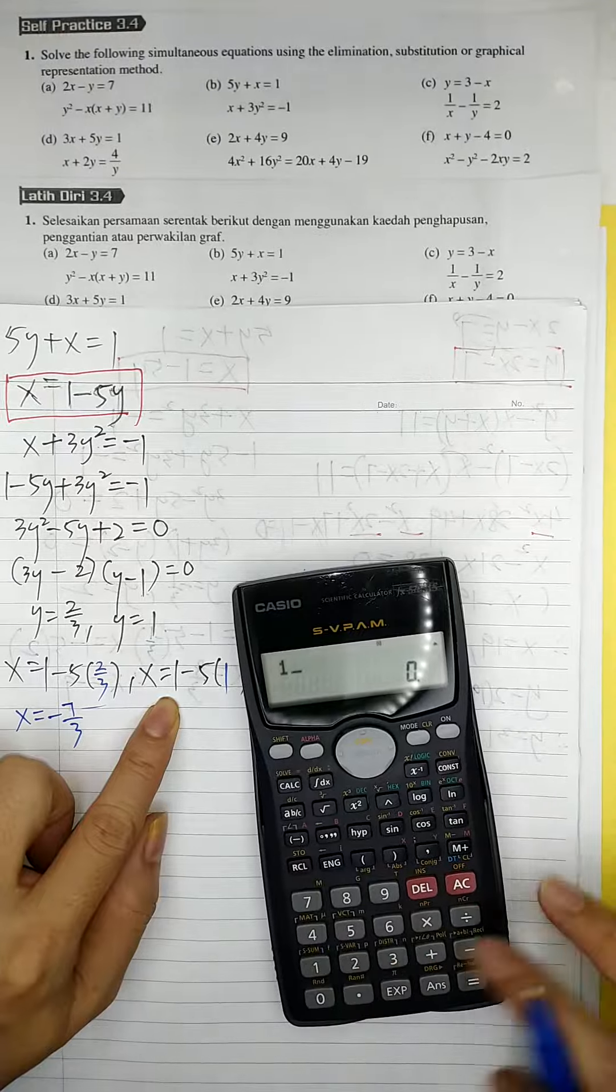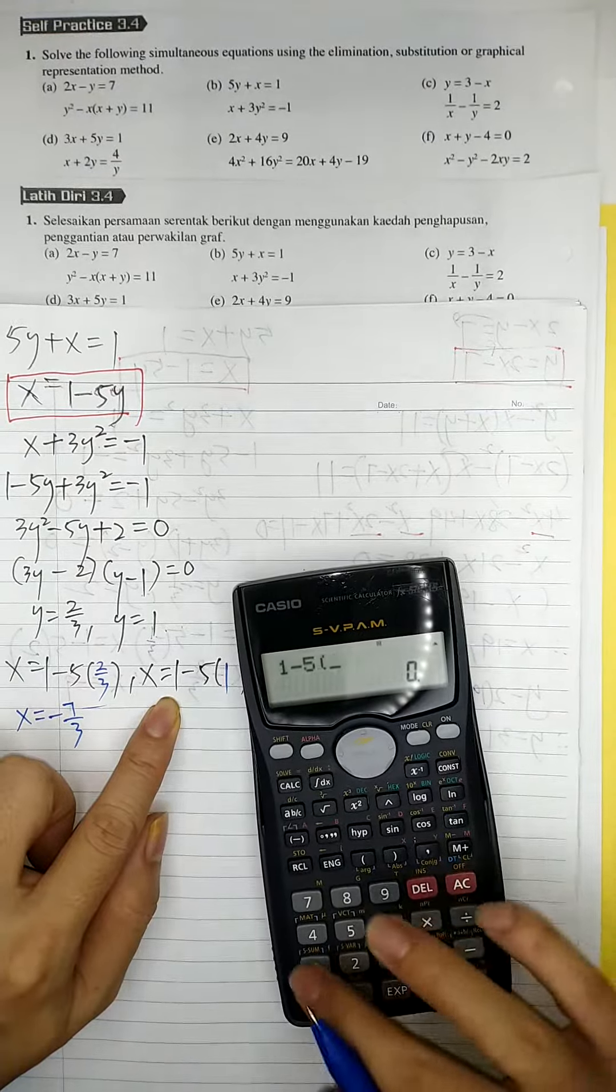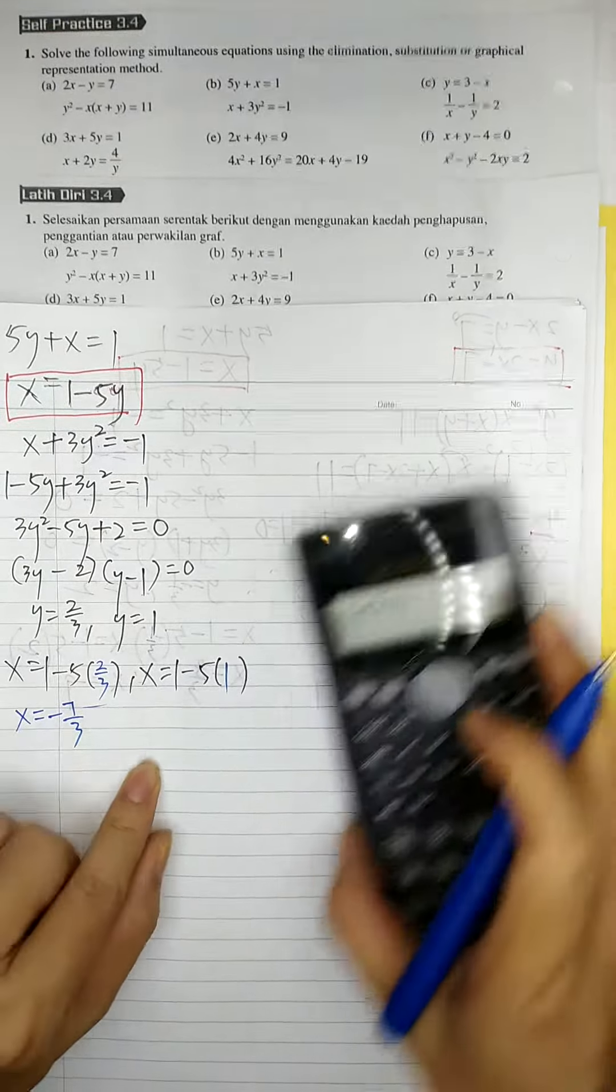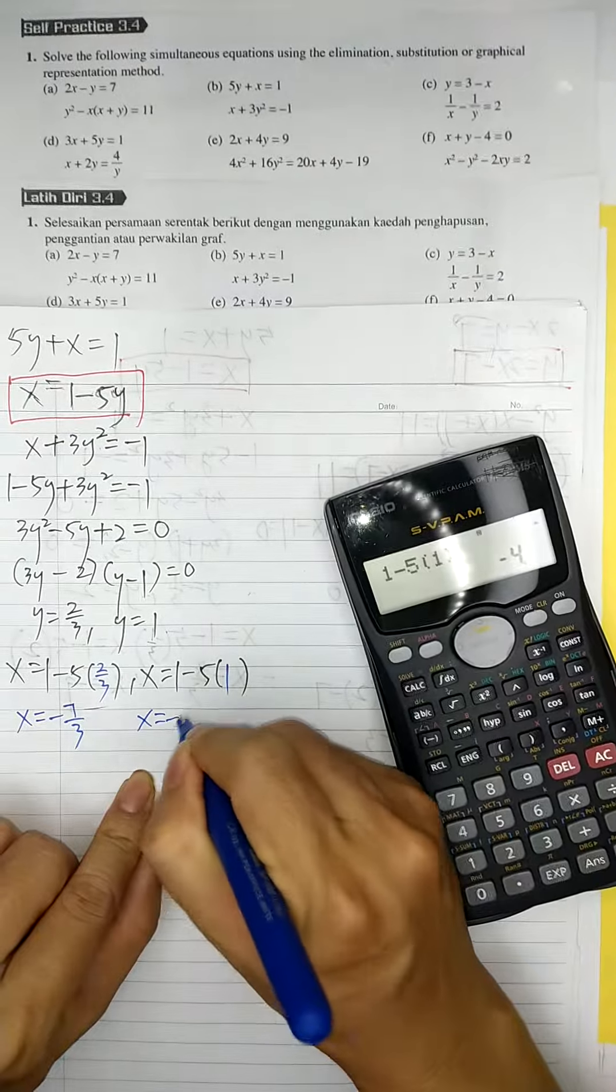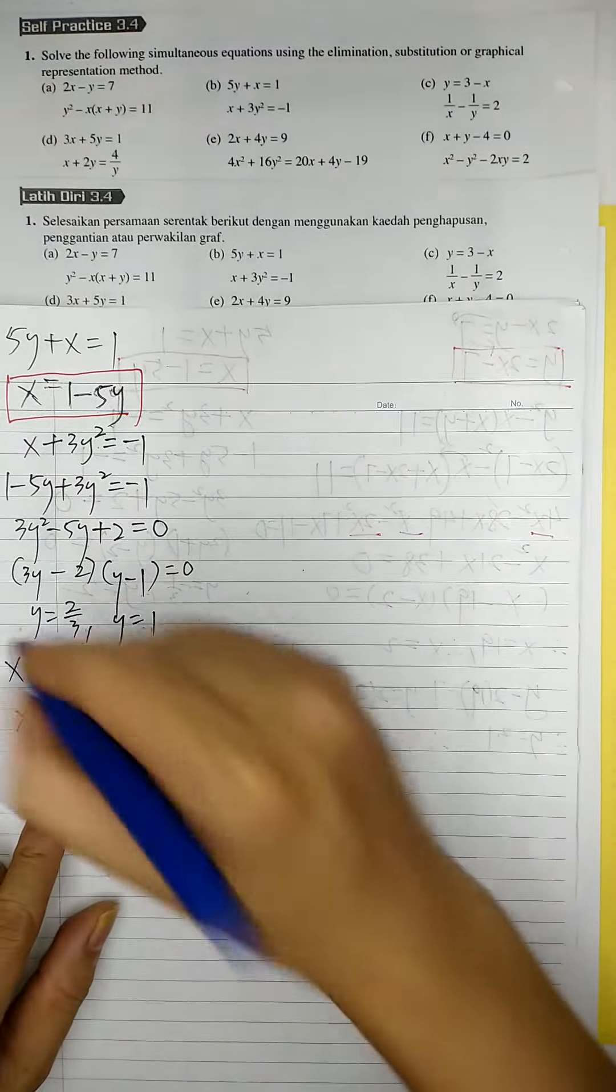And one more: 1 minus 5y gives negative 4. So x equal to negative 4. So the answer.